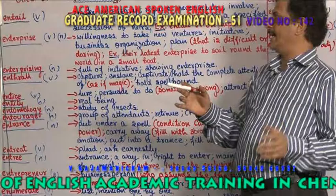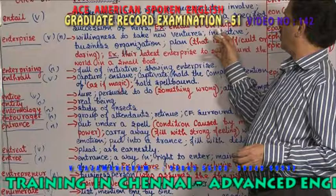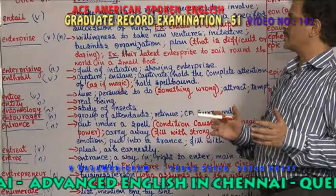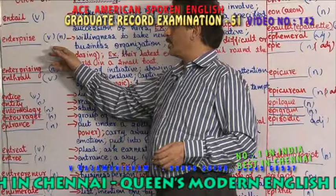Entail means to limit the inheritance of property to a specific line of heirs. Entail — so entail means you have the right, you have to make arrangements, the property or entail, you have the rights to have the property.